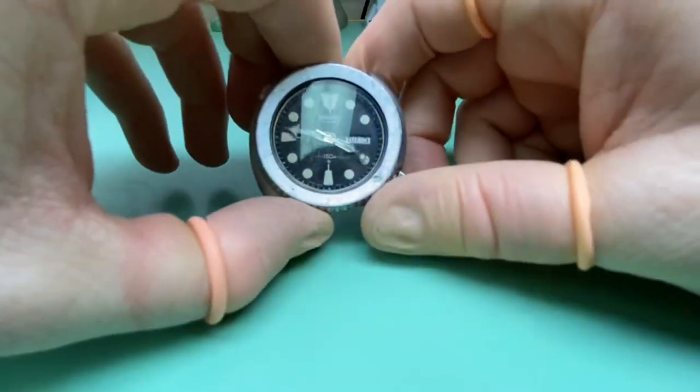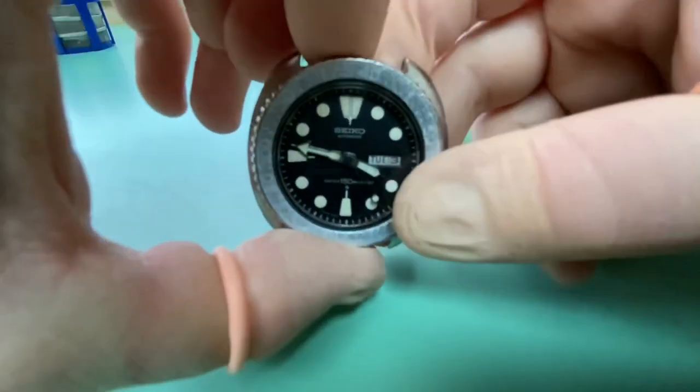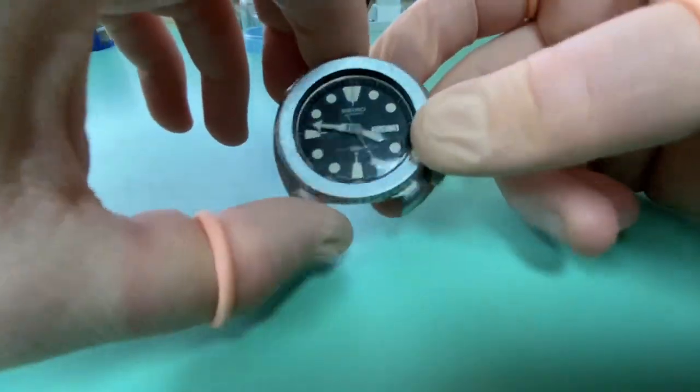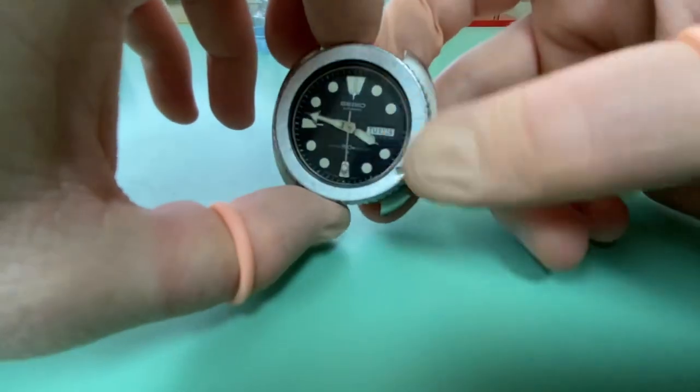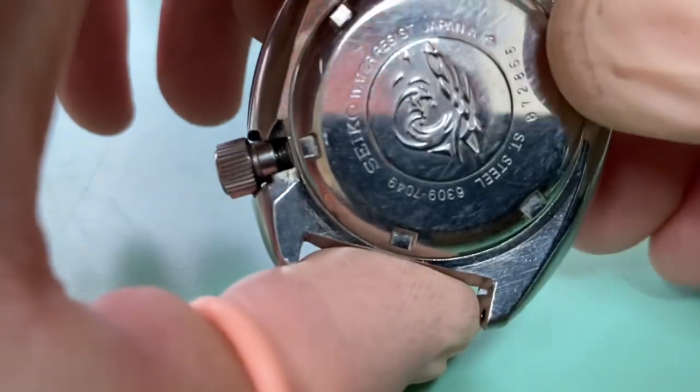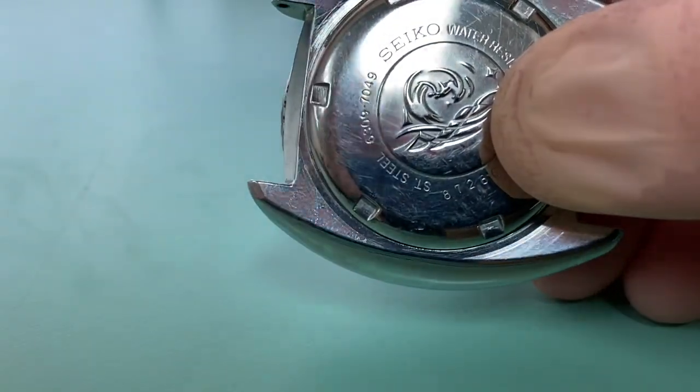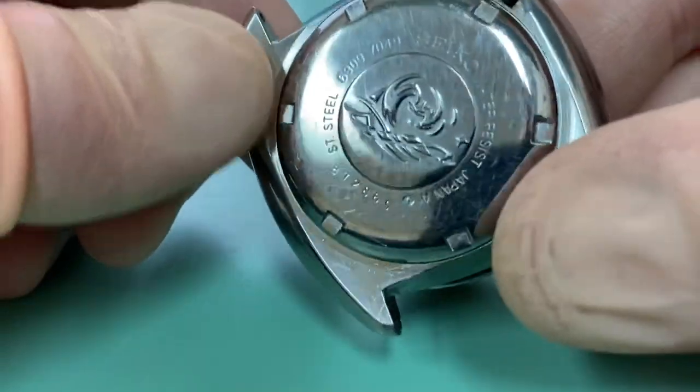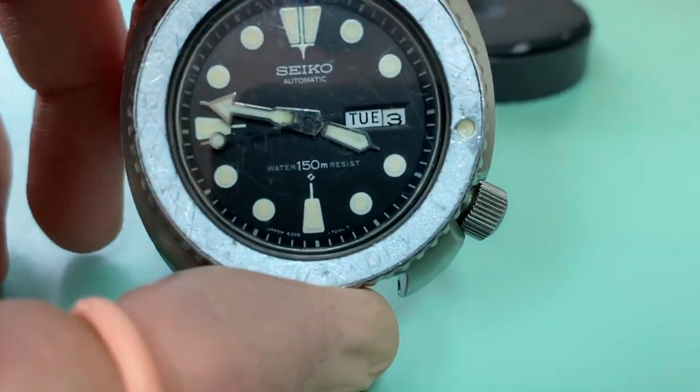Hi guys and welcome to The Psychologist. Today I wanted to take you through the overhaul procedure of a Seiko watch. Today we're going to look at this specific watch, it's a 6309-7049, and we're going to have a look at what exactly happens during an overhaul of a watch like this.